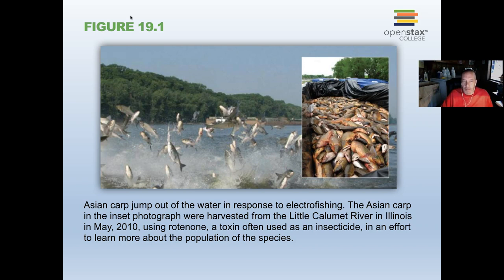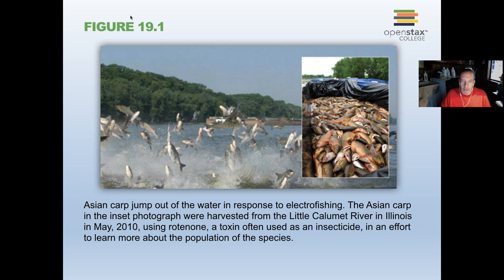From a management standpoint, biologists are interested in how living things interact with each other. Managers have to deal with issues related to species and communities that involve groups of living things that didn't necessarily evolve together. The book discusses the Asian carp, which are now found throughout the upper Mississippi drainage and elsewhere. When exotic or non-native species get introduced, they often out-compete native species — they can be larger, more aggressive, and able to adapt to a wider variety of conditions.